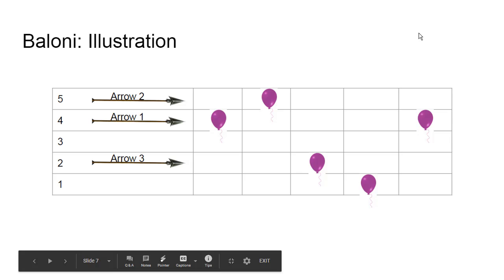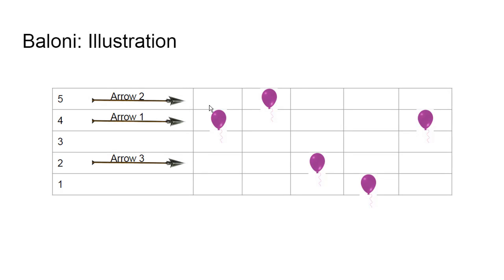So how do we speed this up? How do we avoid scanning through the balloons again and again? The key idea is to simulate all arrows at the same time. For example, we look at the first balloon — we know we need an arrow at that height. After popping, we have an arrow traveling at height three. The next balloon is at height five, but we have no arrow at height five, so we create a second arrow.